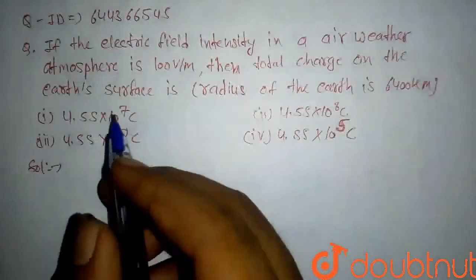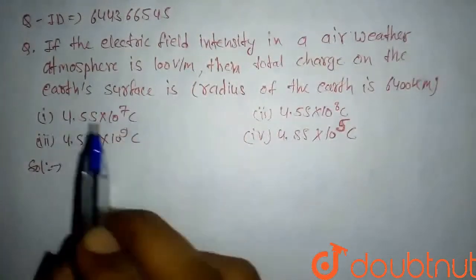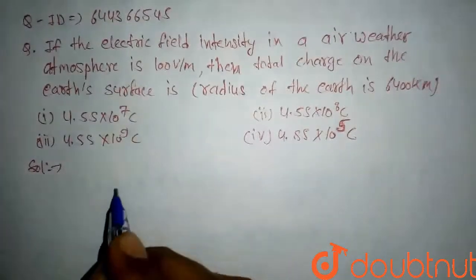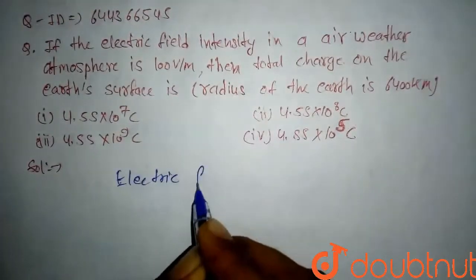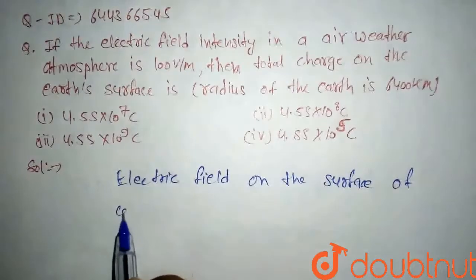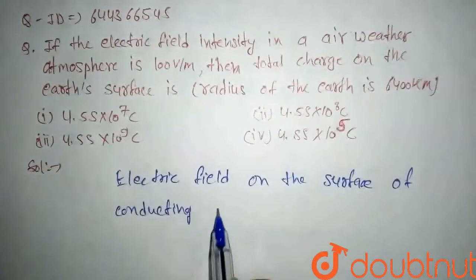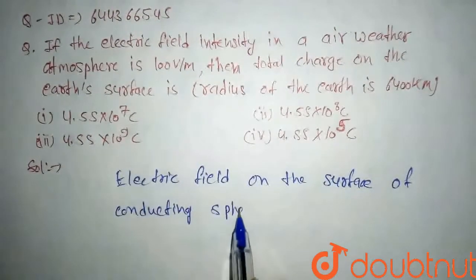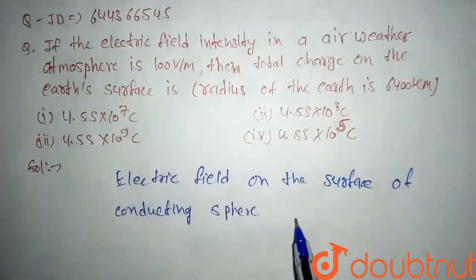So we know that the earth is a conducting sphere. The electric field on the surface of conducting sphere is given by E equal to kQ upon capital R square.